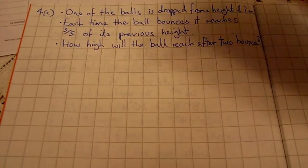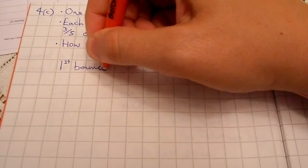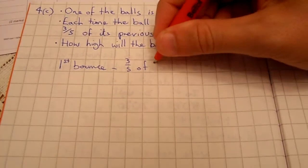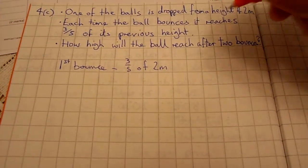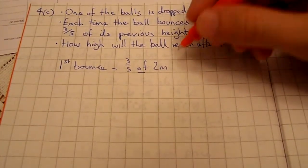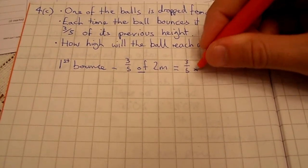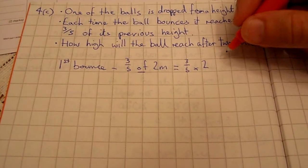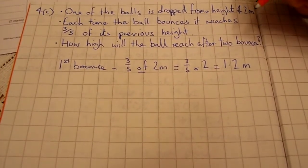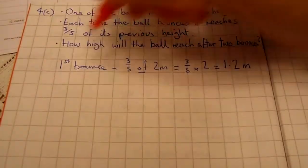On the first bounce, we need to calculate three-fifths of two meters, the starting point from where the ball is dropped. Anytime we see the word 'of' in math, it means to multiply something. So this is the same as saying three-fifths times two, which is going to give us 1.2. Remember your units, and remember you can use a calculator for this question. After the first bounce, the ball has gone to 1.2 meters.